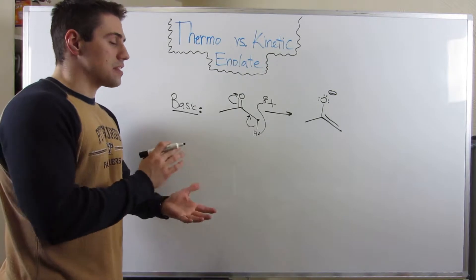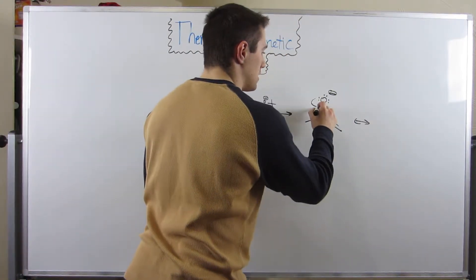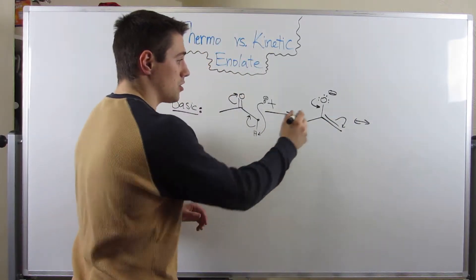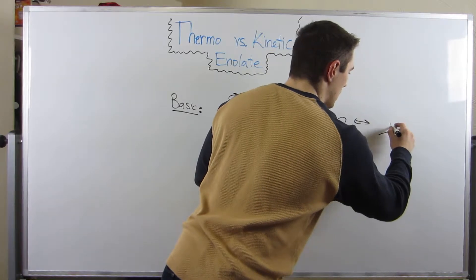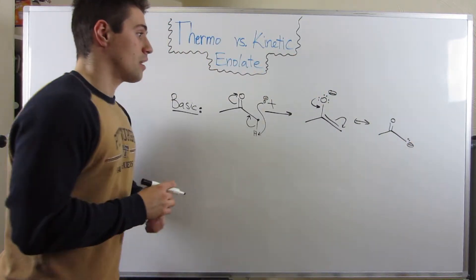But don't forget the type of resonance we can draw. We swing these down, reform the carbonyl, and have these electrons go onto that carbon. So at any given time, this is the form we're looking at.